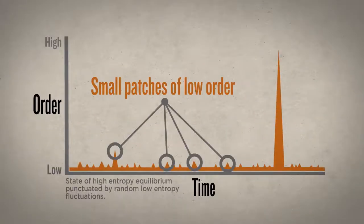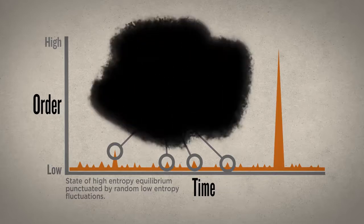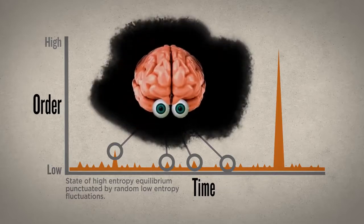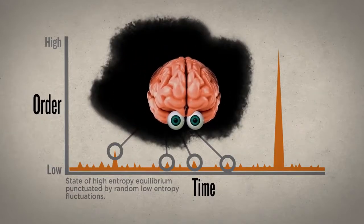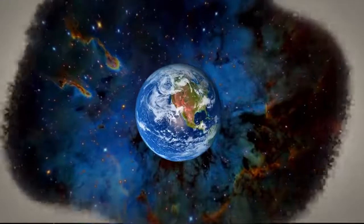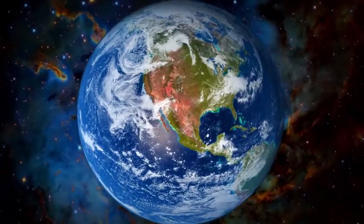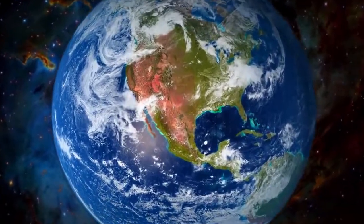Furthermore, small patches of order are far more probable than big ones. So, the most probable observable universe would be a small one, inhabited by a single, simple observer. But what we actually observe is the very thing that we should least expect: a vast, spectacularly complex, highly ordered universe inhabited by billions of other observers.